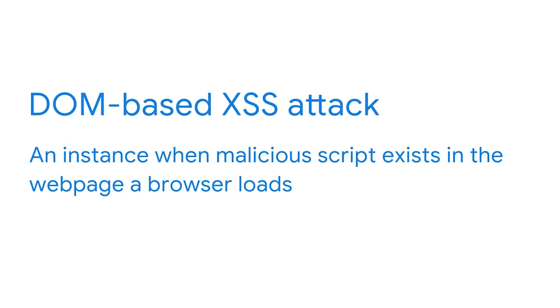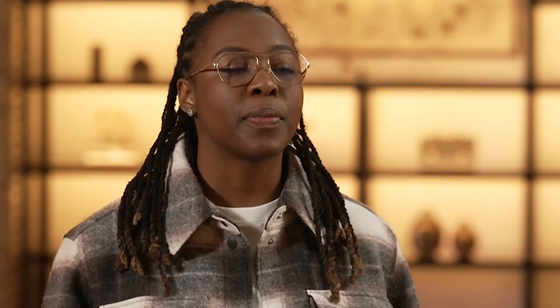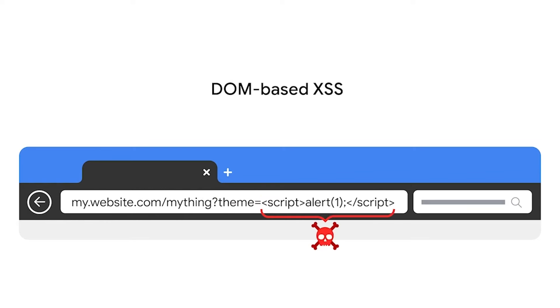Finally, there's DOM-based XSS. DOM stands for Document Object Model, which is basically the source code of a website. A DOM-based XSS attack is an instance when malicious script exists in the web page as the browser loads it — unlike reflected XSS, these attacks don't need to be sent to the server to activate. A malicious script can be seen in the URL, which contains parameter values reflecting input from the user. Criminals change the parameter expecting an input — for example, hiding malicious JavaScript in HTML tags — and the browser processes the HTML and executes the JavaScript. Hackers use these cross-site scripting methods to steal sensitive information.